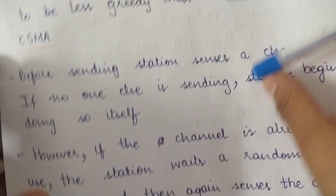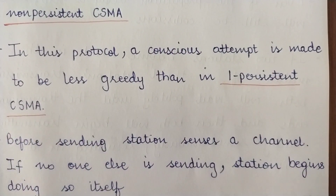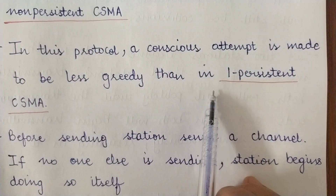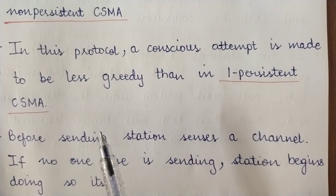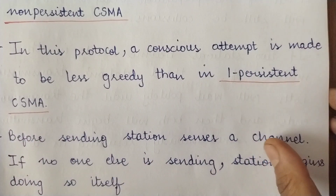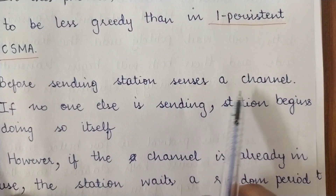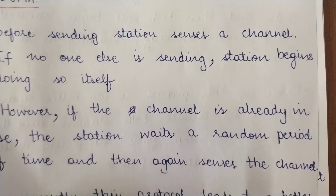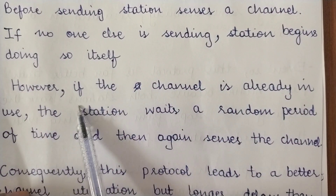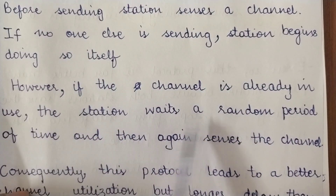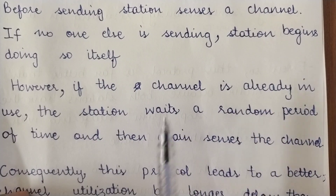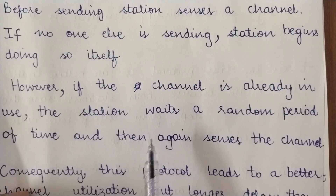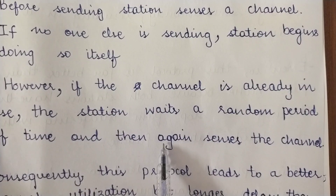The second version of CSMA is Non-Persistent CSMA. In this protocol, a conscious attempt is made to be less greedy than in 1-Persistent CSMA. Before sending, the station senses the channel — if no one else is sending, the station begins transmitting. However, if the channel is already in use, the station waits for a random period of time and then senses the channel again before attempting delivery.